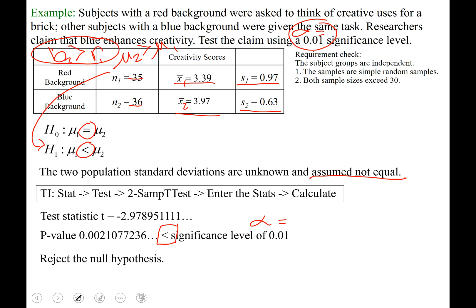0.002 is less than 0.01. And you guys know the rhyme by now, if p is low, the null must go. So we reject the null hypothesis. And then we say there is sufficient evidence to support the claim that blue enhances creativity. Pause that video, watch it again if you need to. Go through it slowly. There are a lot of thought processes that go between each step that you want to focus on.